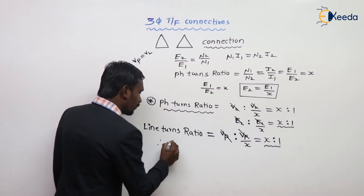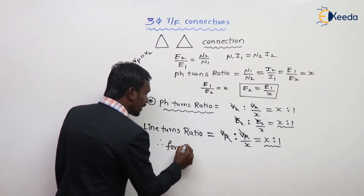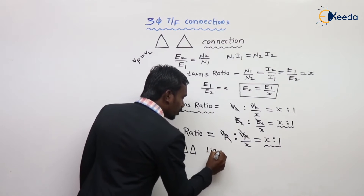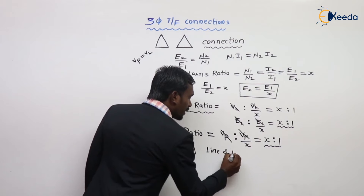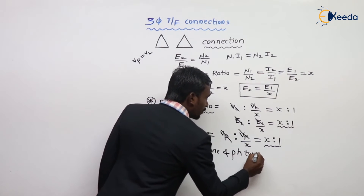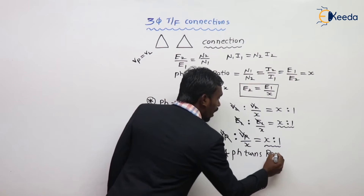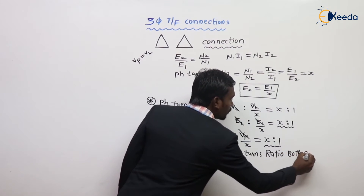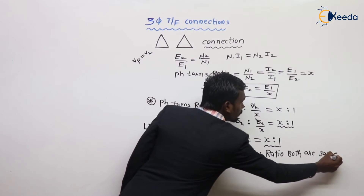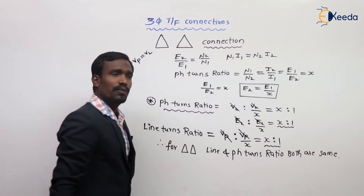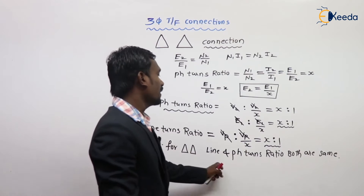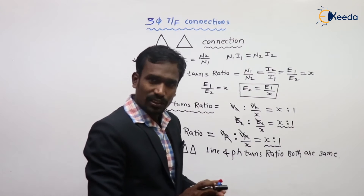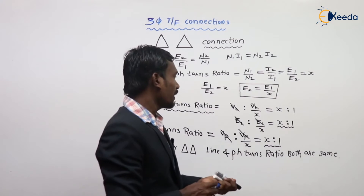For delta-delta connection, line turns ratio and phase turns ratio are both the same — X to 1. There is no change. Both are same for delta-delta connection.